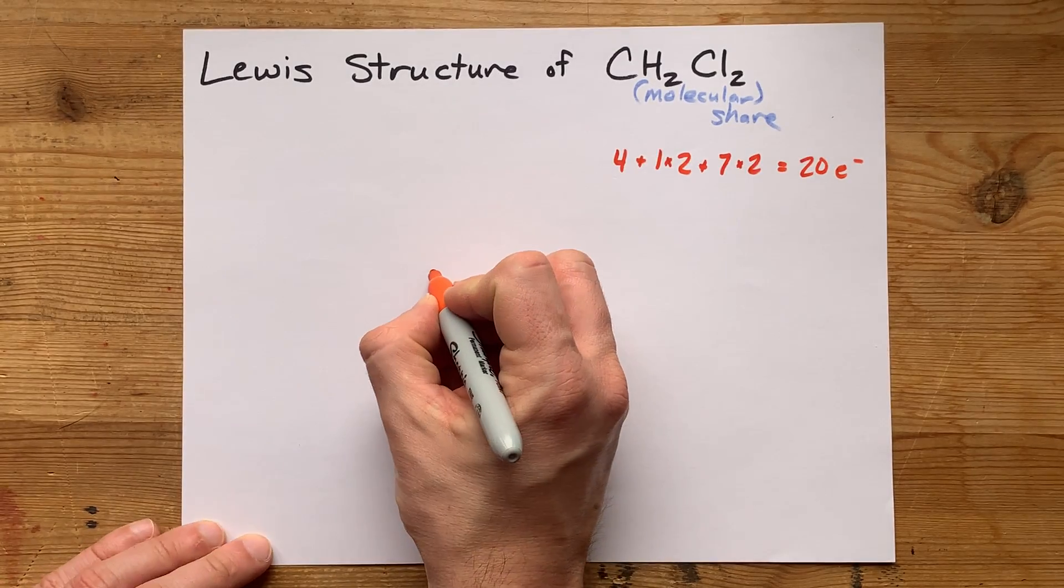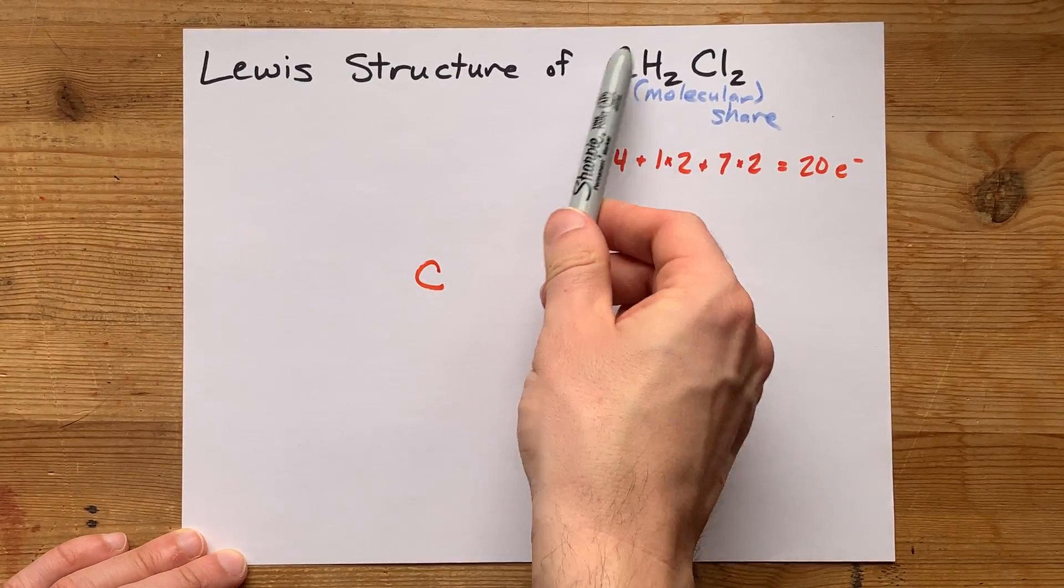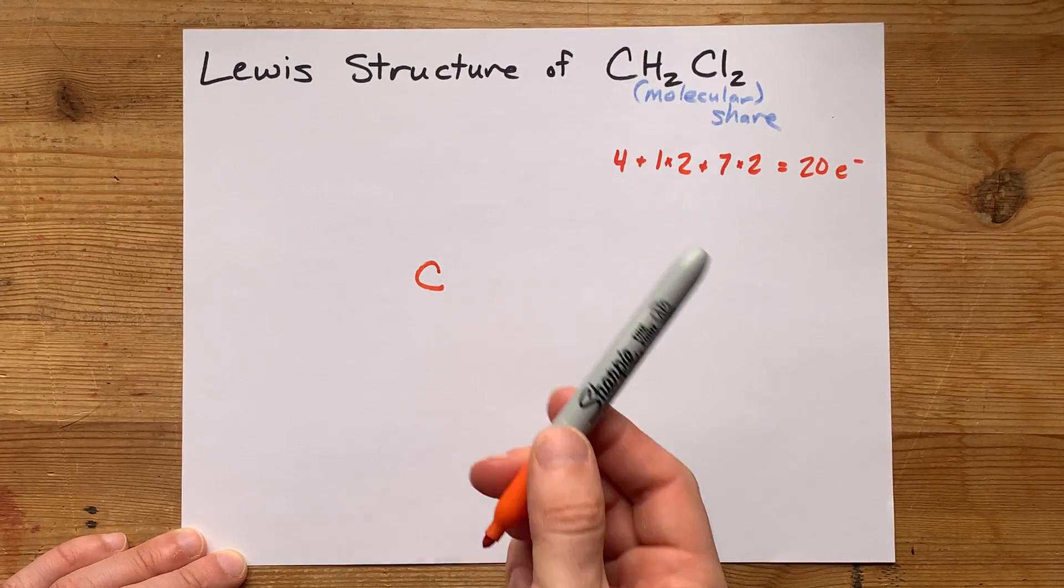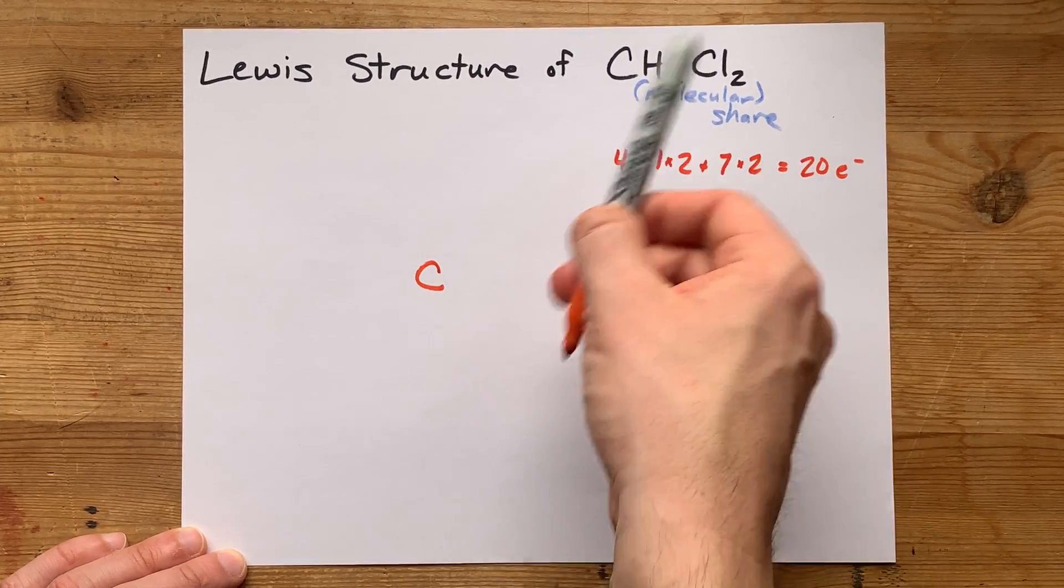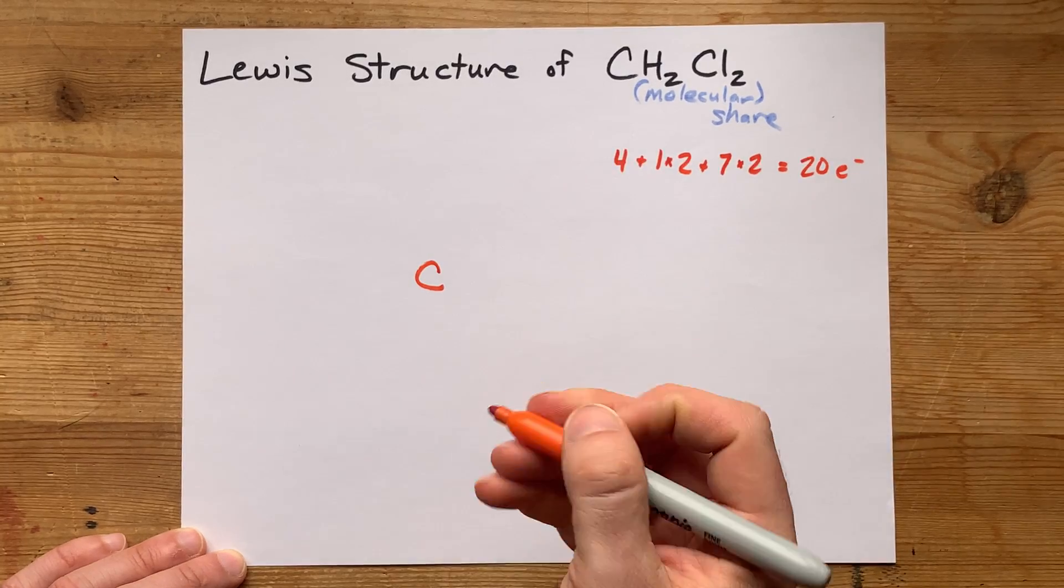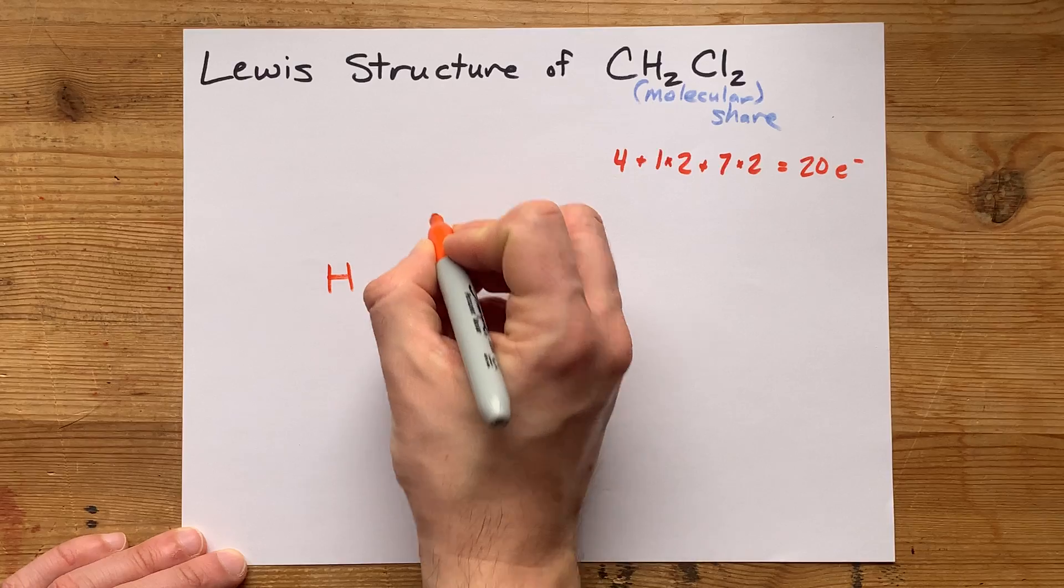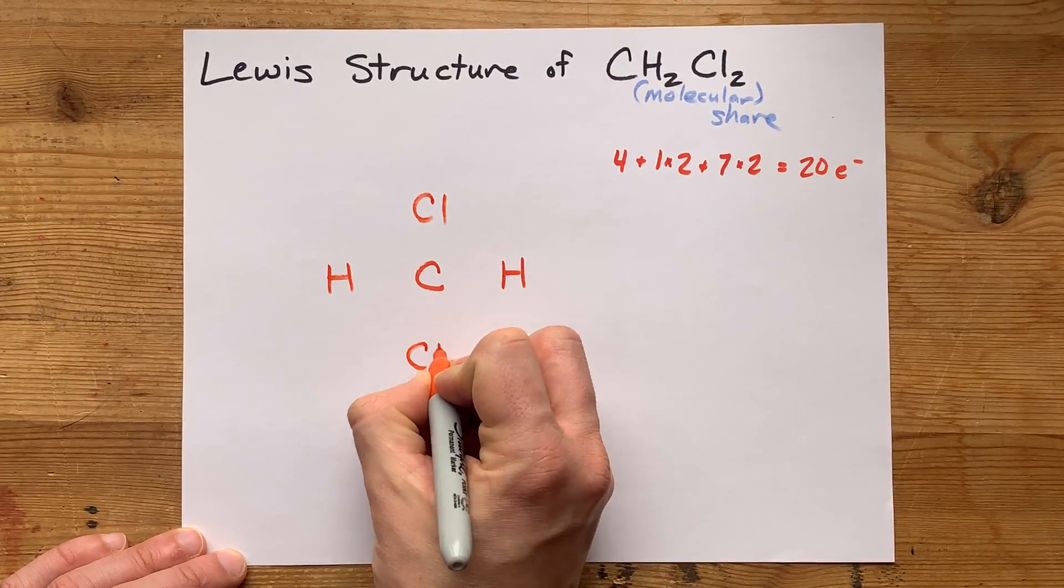Now I'm going to start by putting my carbon in the center. Of these atoms, carbon can make four bonds, which is more than these can make. So I put the thing that can make the most bonds in the center. And then I surround it, in this case, by two H's and two Cl's.